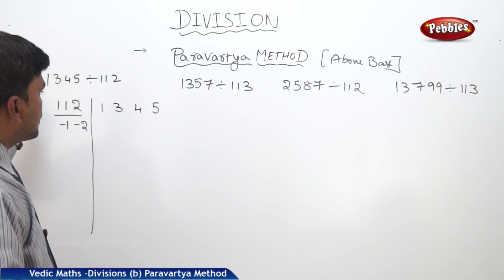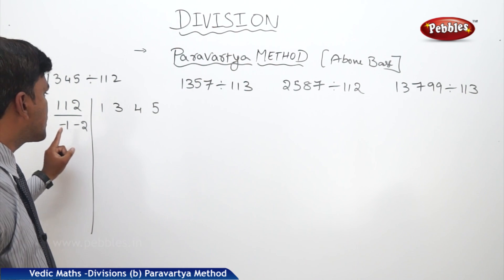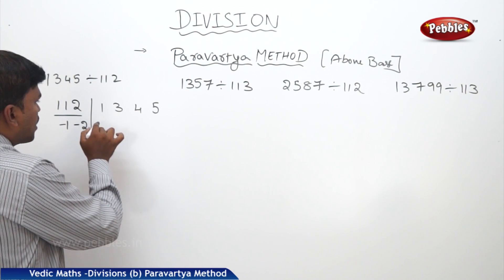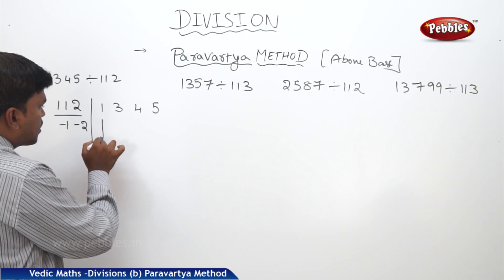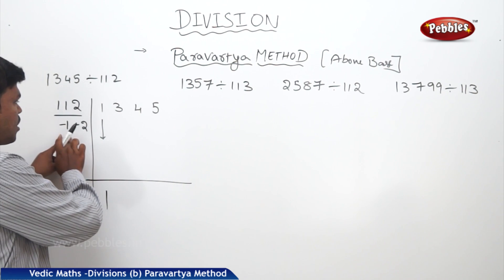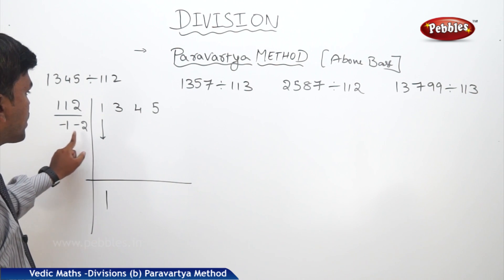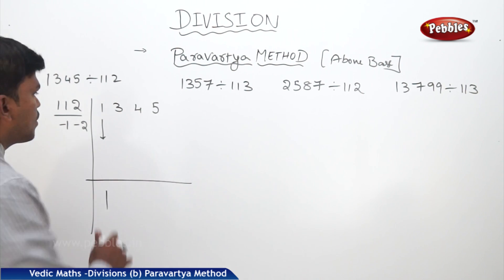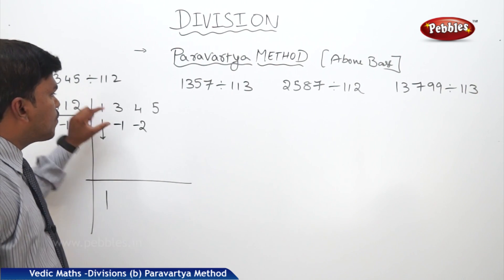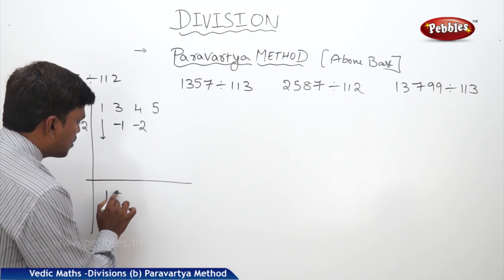Paravartya means transpose. So leaving the leftmost digit, the remaining digits you write as they are but with opposite signs. Here it is plus, so I am putting it as minus. So minus 1, minus 2. Now, simply drop the first digit as it is — that is, 1. Now solve the second column: 3 minus 1 equals 2. Write 2 here.